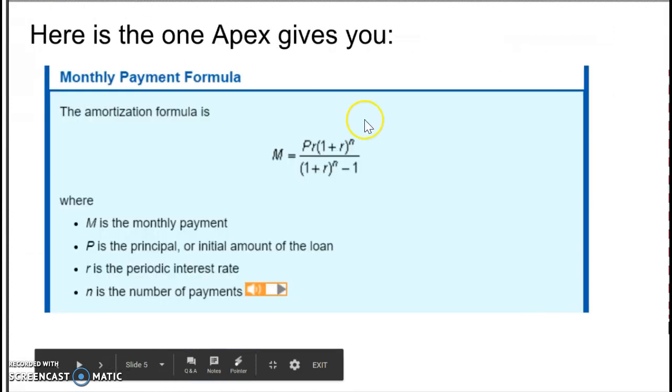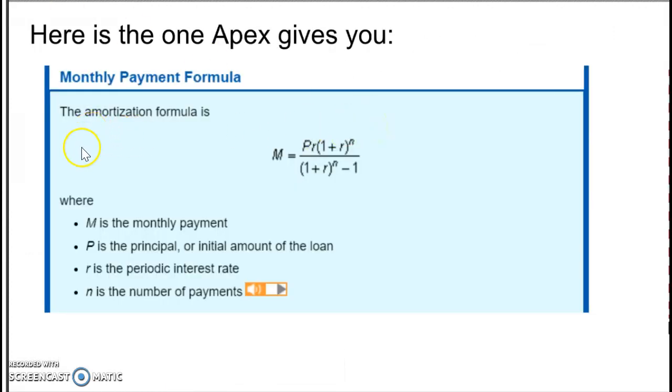The one we are going to focus on is the one Apex gives you. Keep in mind I want to note a few things here. M stands for the monthly payment, P stands for the principal. R here - I know a lot of times we've been using R for the APR - in this case the R, keep in mind, is the periodic interest rate.